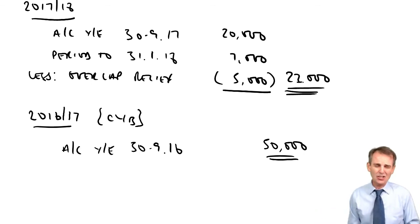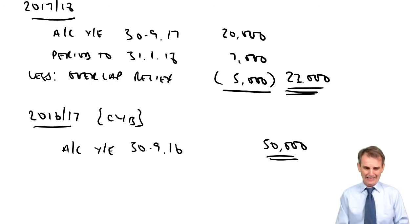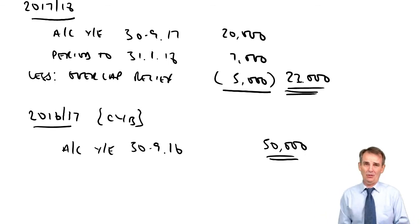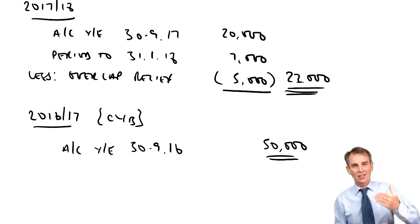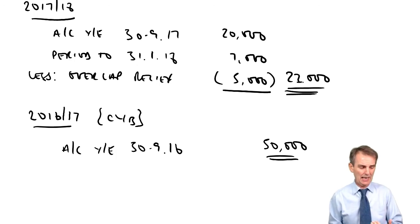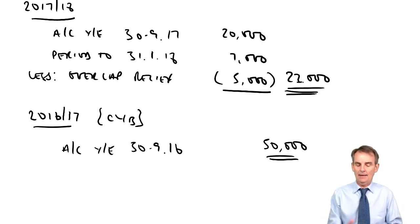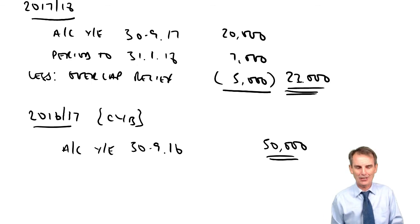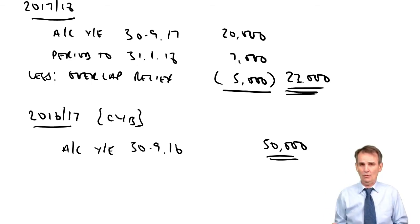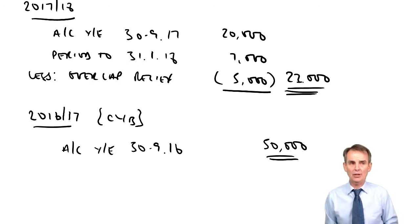Closing years are so much easier than opening year problems with all their different options depending on start date and choice of accounting date. The three-step approach: look at your cessation date to identify the final tax year, go back to the penultimate tax year and assess using CYB, then all remaining profits — one or two periods — go into the final tax year with any overlap relief deducted. Assessments sorted.